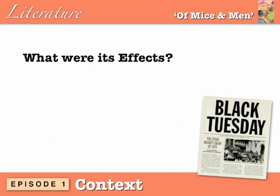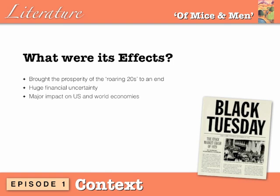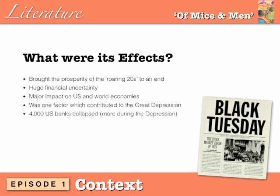The effects of the Wall Street Crash: it brought the prosperity of the Roaring Twenties to an abrupt end. It caused huge financial uncertainty and had a major impact on US and world economies, plunging countless countries into crisis. It was one factor which contributed to the Great Depression, and it caused the collapse of 4,000 US banks — in many cases meaning people lost their savings.